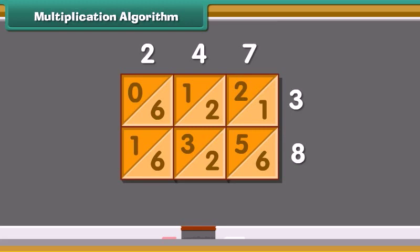Now start at the bottom and add down the diagonal strips. Write 6 as it is. 2 plus 5 plus 1 is 8. 6 plus 3 plus 2 plus 2 plus 2 is 13. We get a two-digit answer. So, we just write 3 below and carry 1 in the next strip.